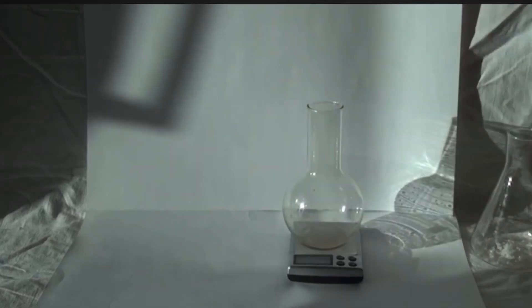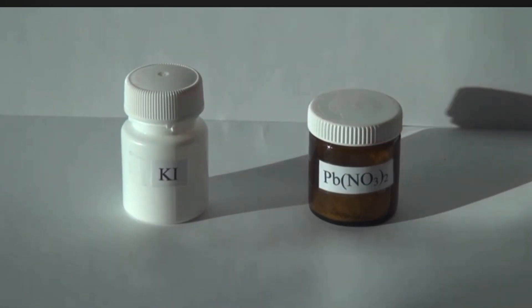What if I told you chemistry could create something as stunning as golden rain? Let's dive into this magical experiment. To create golden rain, we start with two clear solutions, potassium iodide and lead nitrate.